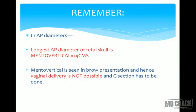The longest anteroposterior diameter of the fetal skull is the mentovertical at 14 cm, seen in brow presentation. There is no mechanism in brow, so vaginal delivery is not possible because the pelvis maximum is 13 cm and 14 cm cannot pass through. Therefore, mento vertical in brow presentation requires C-section.